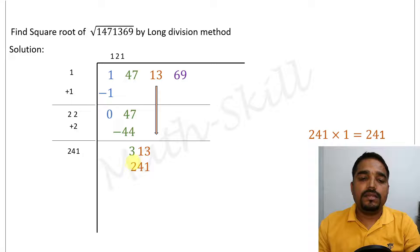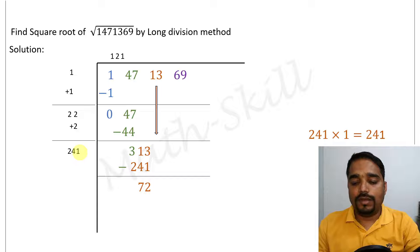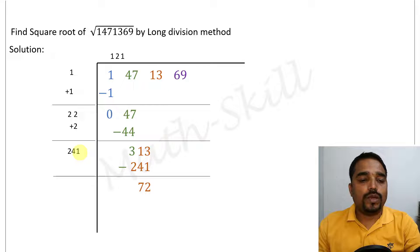Let's take it here. Upon subtraction from 313, it would be 3 minus 1 is 2, 11 minus 4 is 7. That is we are getting 72. Before proceeding, let's take this 1 which is the latest number in the quotient and add it to 241. 241 plus 1 is 242.